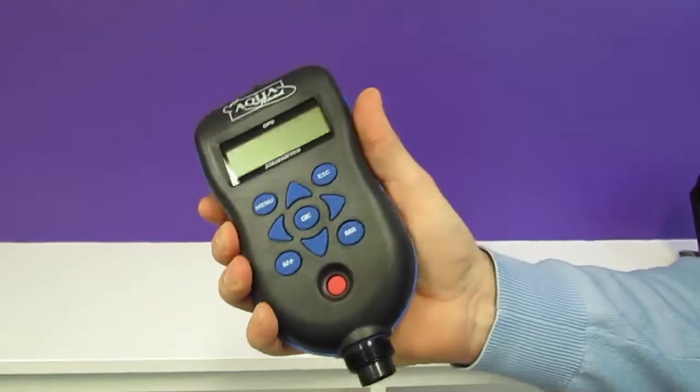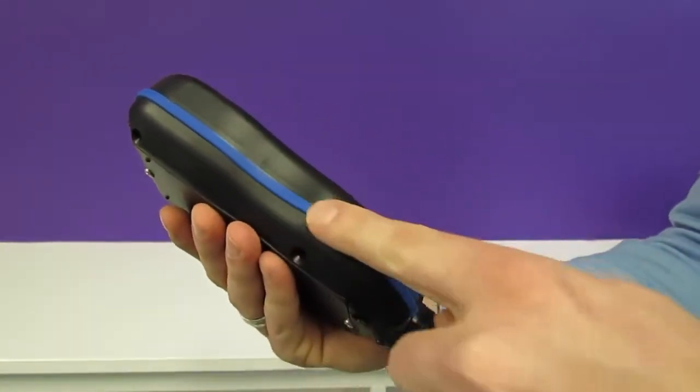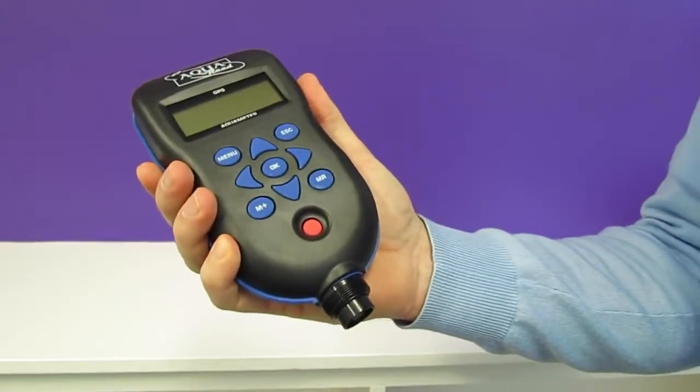The meter sits very well in the hand and is ergonomically designed. It features a rubber gasket that runs the length of the meter to help keep it in your hands even in wet conditions.